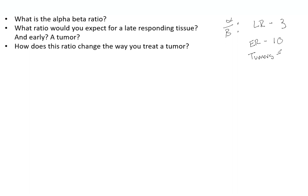For tumors — as we treat them, even over the course of a standard fractionation treatment, we see them shrink and break up. That makes sense given that their alpha-beta ratio is around 10, because they are affected quite drastically by radiation.